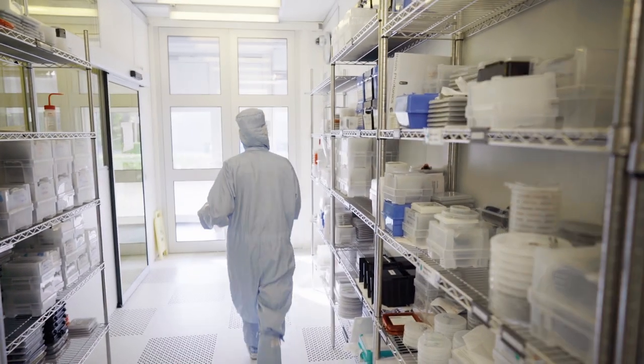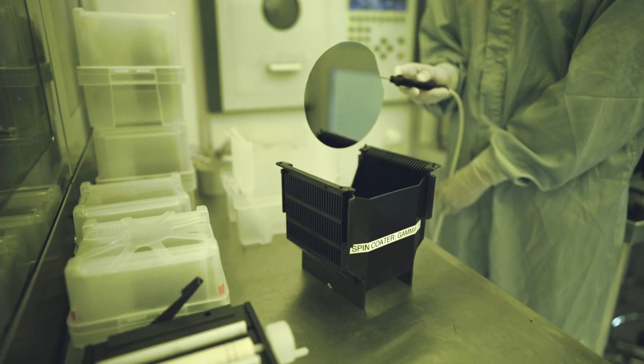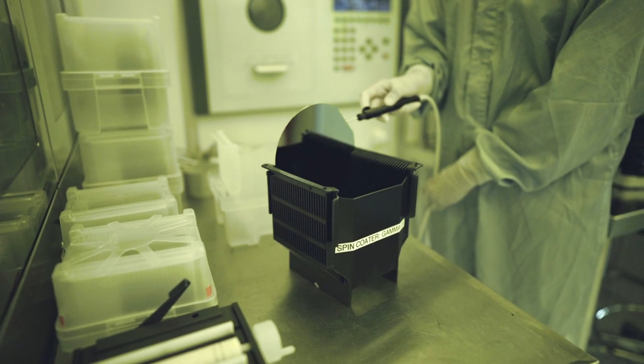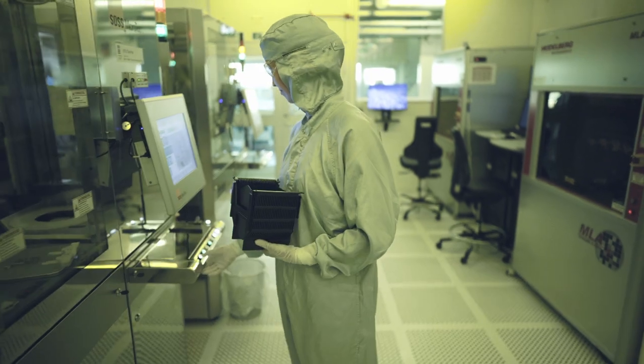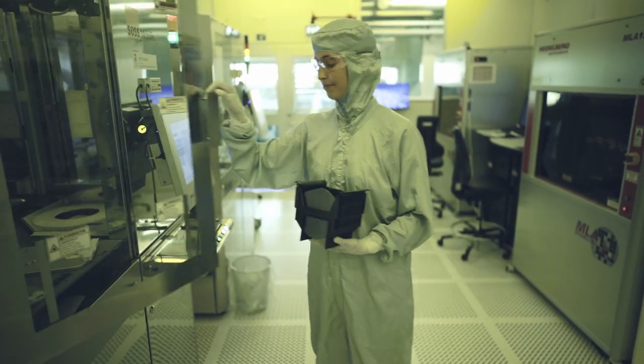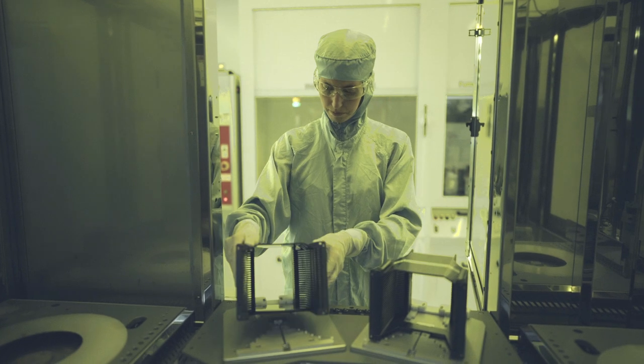The process starts by spin coating an electron-sensitive resist onto the substrate. This is done on a fully automatic cassette-to-cassette coating system capable of running both 2, 4 and 6 inch wafers.